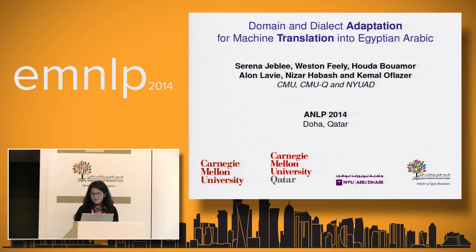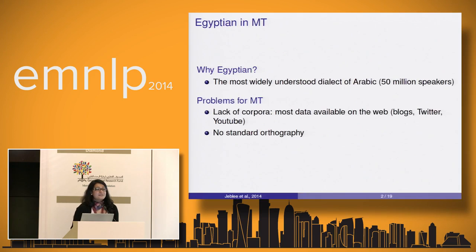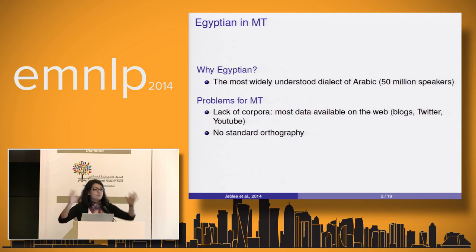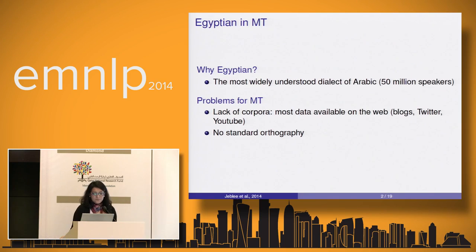Why are we interested in Egyptian Arabic in MT? Because Egyptian is the most widely understood dialect of Arabic, and we want to build a machine translation system that translates into Egyptian. What has been done until now is translating from a dialect into English or from MSA into English. We wanted to try translating into the dialect and see how our system performs.